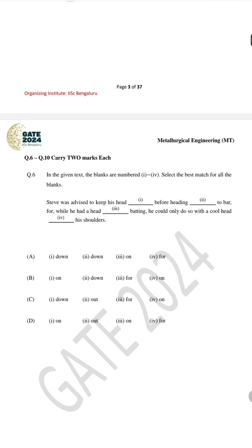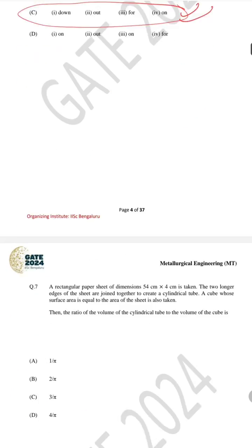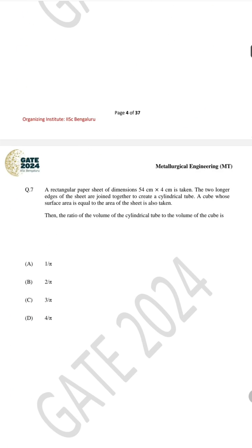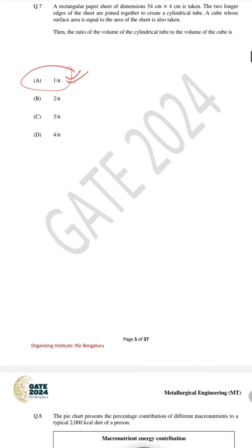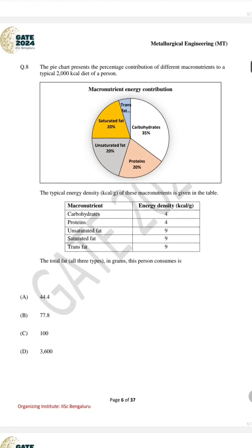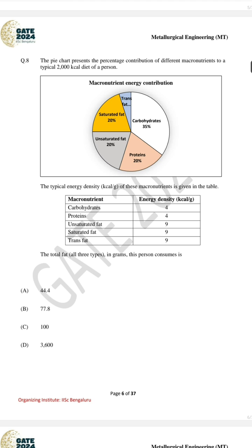For question number six, which is for two marks, the correct answer is option C. For question number seven the correct answer is 1/π, which is A. For question number eight, the pie chart problem, the correct answer is 100, which is C.